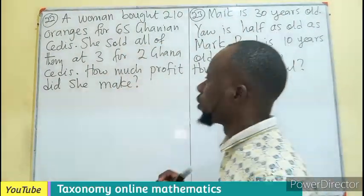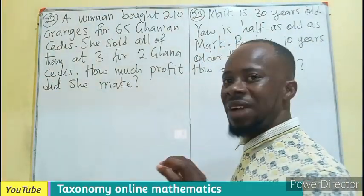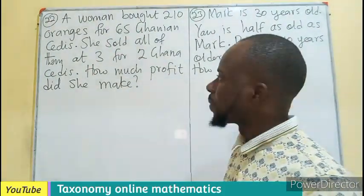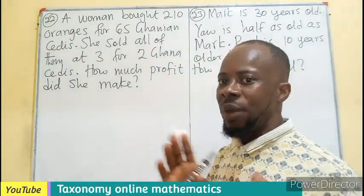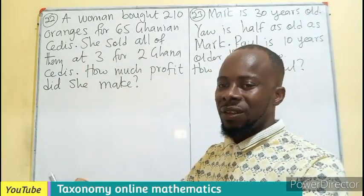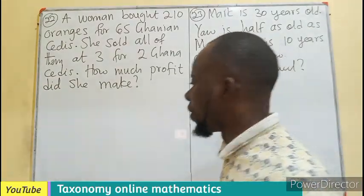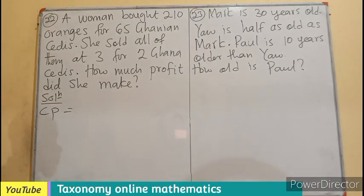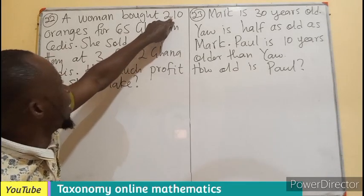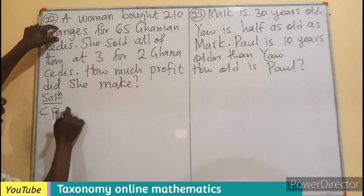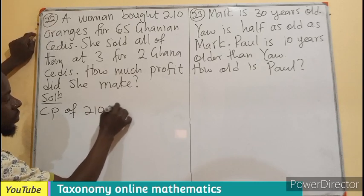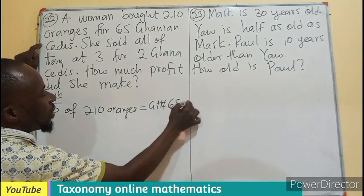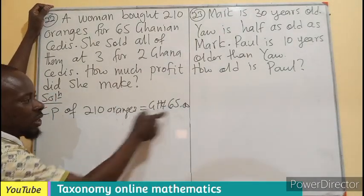Question 22: A woman bought 210 oranges for 65 Ghana cedis. She sold all of them at three for two Ghana cedis. Before we can find the profit, we need to know the cost price. The cost price of all 210 oranges is given as 65 Ghana cedis — that is how much she paid for them.